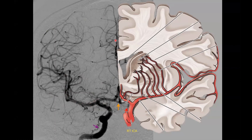The M1 segment comes up right here, giving off the lenticulostriate arteries. Then it enters the sylvian fissure. It has the sylvian segment — the M2 segment — then the M3 opercular segment, and up here M4, the cortical segment. The MCA is a hugely important vessel for cortical supply.